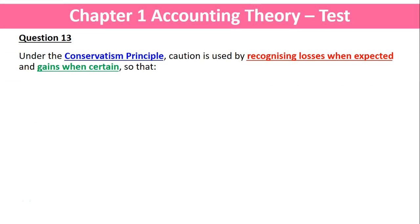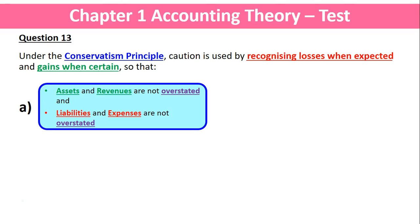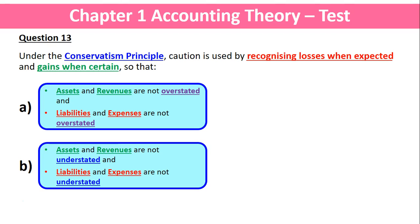Question 13. Under the conservatism principle, caution is used by recognising losses when expected and gains when certain, so that option a: assets and revenues are not overstated, and liabilities and expenses are not overstated.